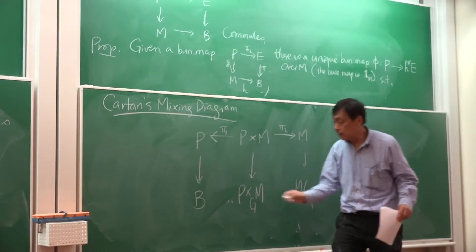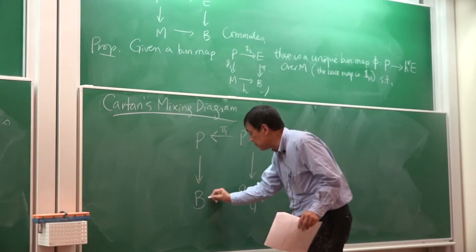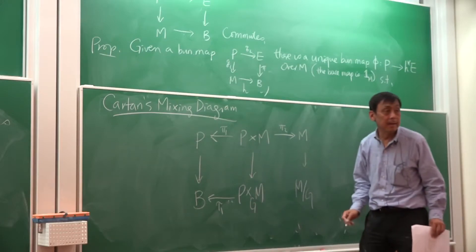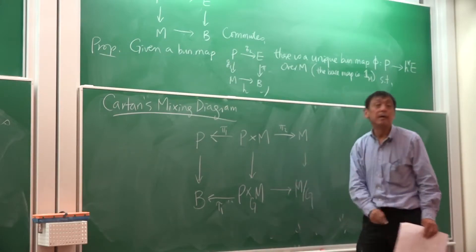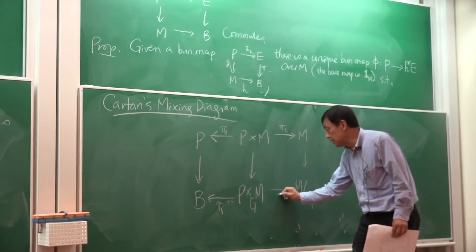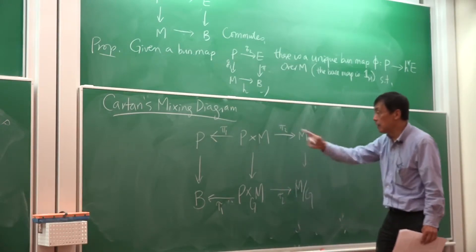So from the mixing space, you have a projection to B, I call that tau 1. I can also define a projection to M over G, that would be tau 2.